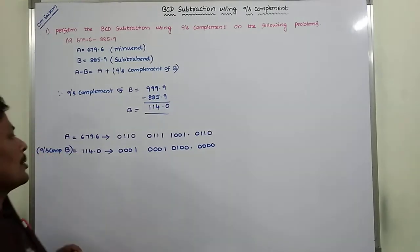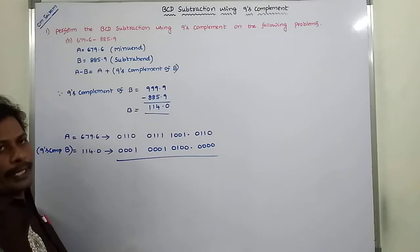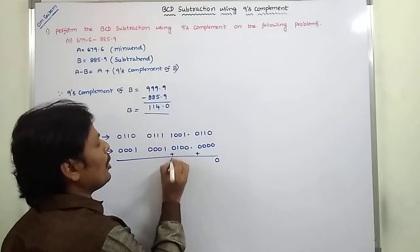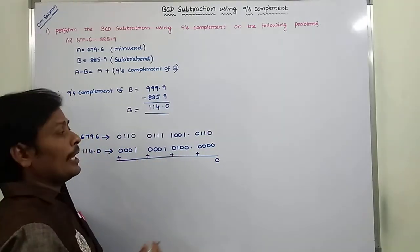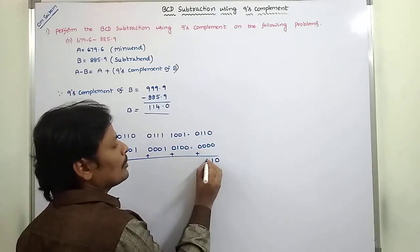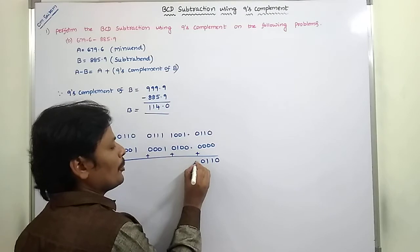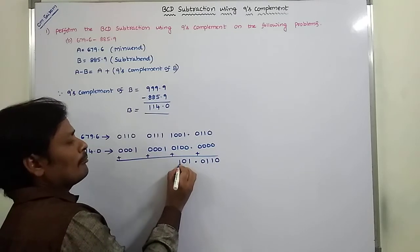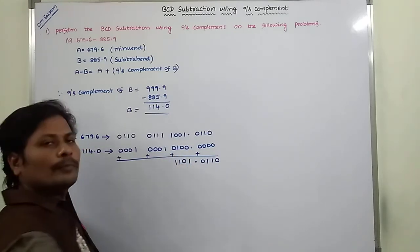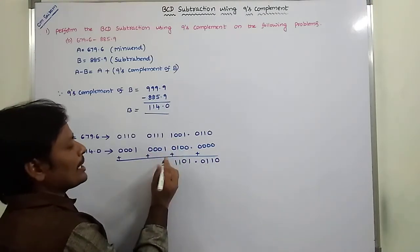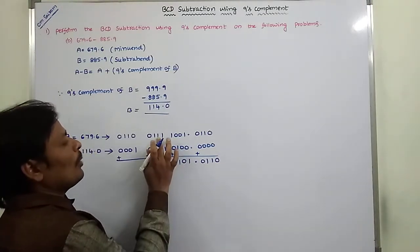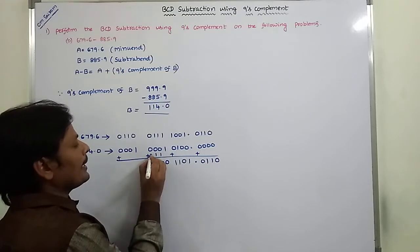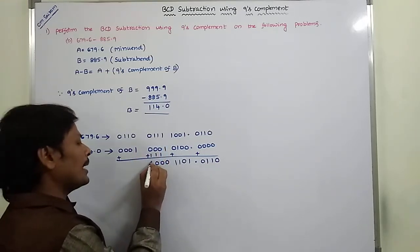Now we perform the addition operation. For the first group (decimal): 0 plus 0 is 0, 1 plus 0 is 1, 1 plus 0 is 1, 0 plus 0 is 0. Second group: 1 plus 0 is 1, 0 plus 0 is 0, 0 plus 1 is 1, 1 plus 0 is 1. Third group: 1 plus 1 is 0 carry 1; 1 plus 0 plus 1 is 0 carry 1; 1 plus 0 plus 1 is 0 carry 1; 0 plus 0 plus 1 is 1.